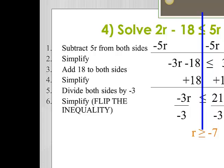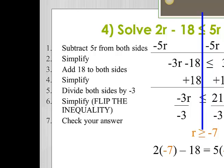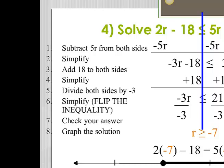Let's check this answer. I'm going to substitute in the value of negative 7 for r, remembering to set both sides of the inequality equal to each other. Two times negative 7 is negative 14, minus 18 is negative 32; 5 times negative 7 is negative 35, plus 3 is also negative 32 — so my check is good. I need to remember to graph my solution: a number line with negative 8, negative 7, and negative 6. I'm going to put a closed circle on negative 7 and shade to the right.